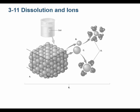What is this molecule from this table salt — sodium chloride? It happens to be sodium. How do I know? Because this is water, H₂O, and the oxygen of water is partially negative, so the negatives orient towards the positive sodium. What's this other one? It's chloride. How do I know? Because the hydrogens of H₂O are partially positive, and they orient towards the negatively charged chloride.